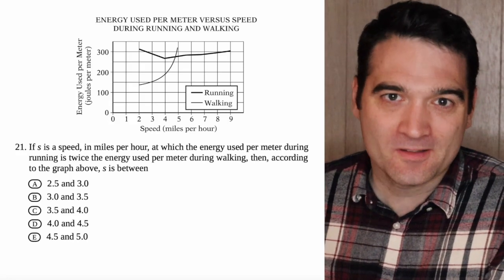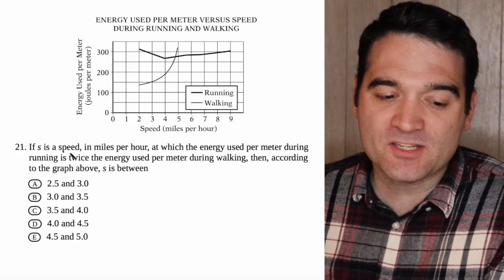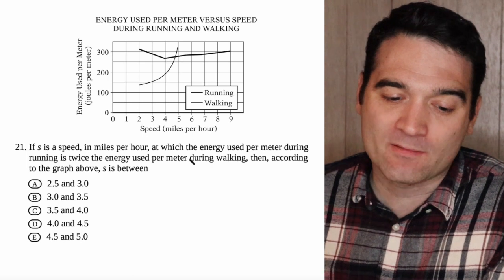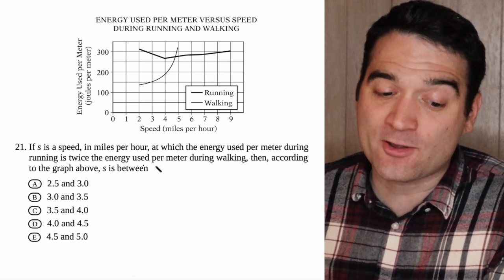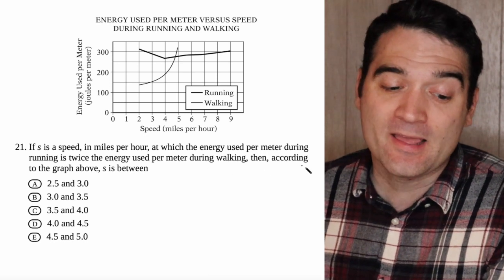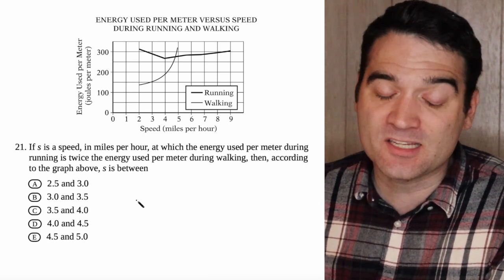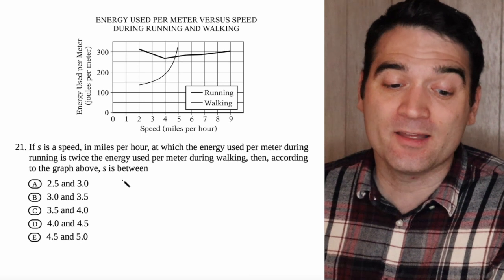Here's a GRE data question. Let's take a look. If S is a speed in miles per hour at which the energy used per meter during running is twice the energy used per meter during walking, then according to the graph above, S is between what and what?